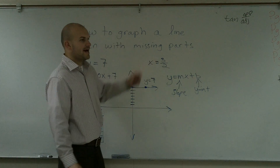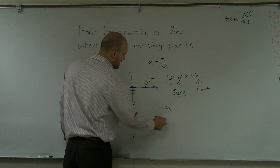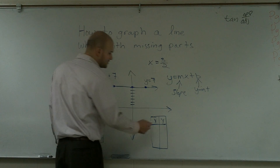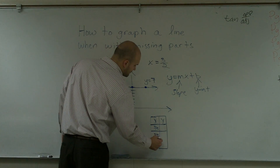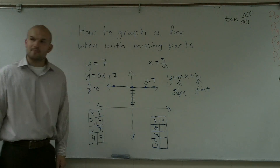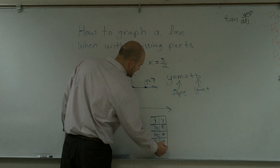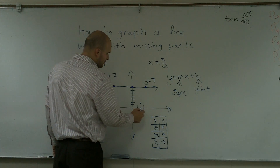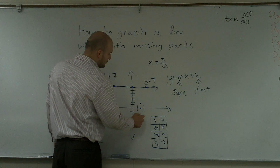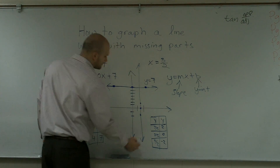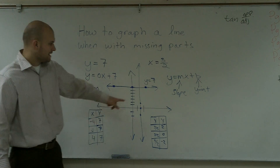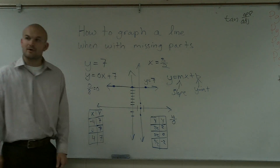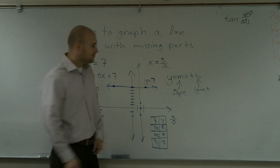The same thing is true for x equals 3 halves. When trying to graph this, I'll set up my x and y values. We already know x always equals 3 halves. I just pick values for y: 2, 0, and negative 2. Since 3 halves is 1.5, I plot the points — (2, 1.5), (0, 1.5), (negative 2, 1.5) — and I get a nice vertical line. The change in y is 4 and the change in x is 0, and we can never divide by 0, so the slope is not 0 but undefined.